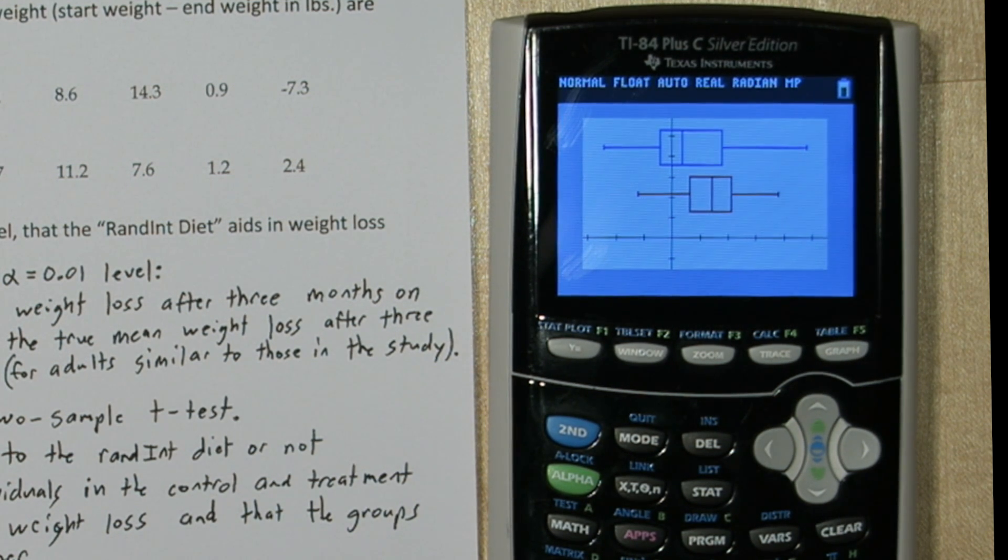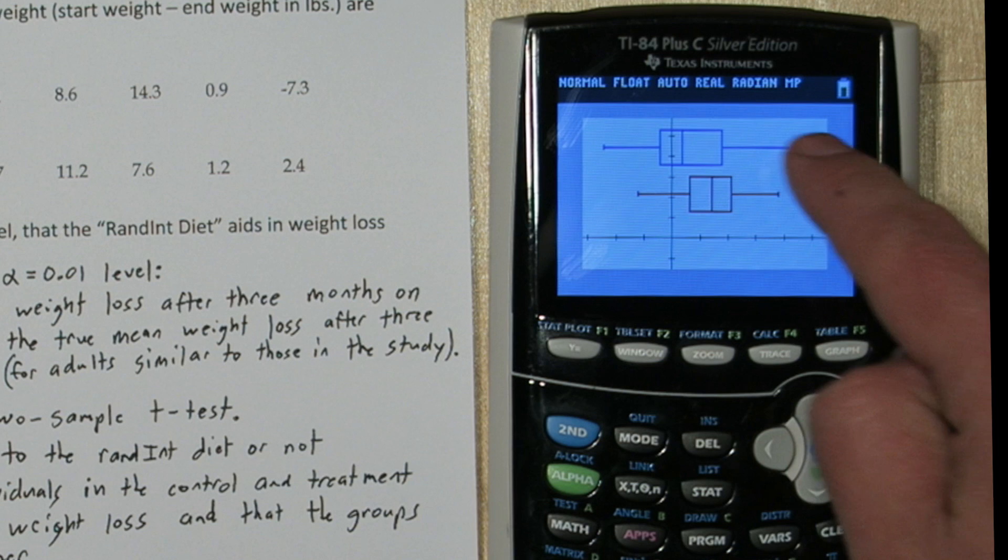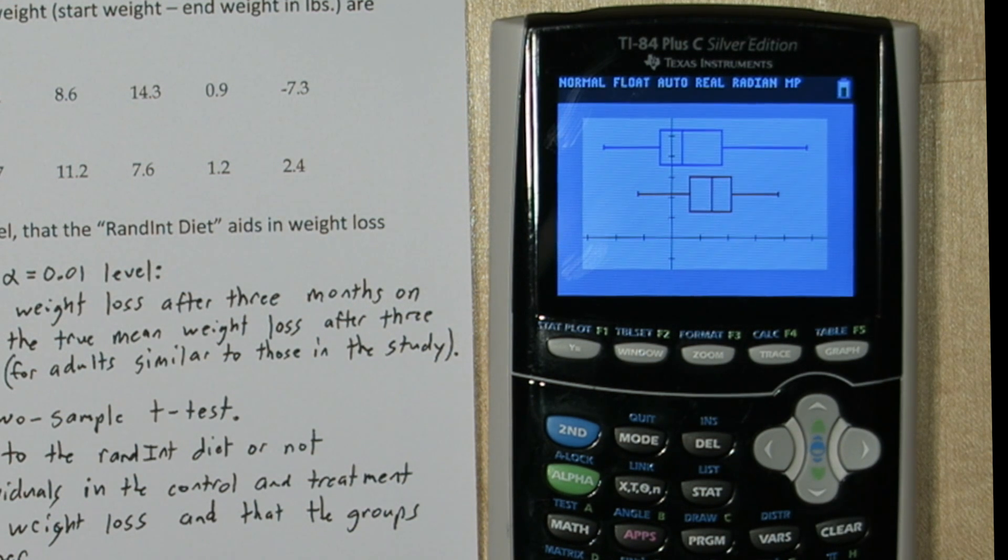But before we do that, we need to just check do either of these have outliers. Now since there's no dots or asterisks or anything beyond the whiskers of these box plots, there's no outliers in either group's data set.